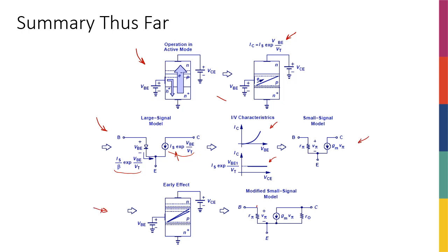Then we introduced the early effect and realized it's not a perfect current source — there's a little slope on the IC-VCE line. The modified large-signal equation becomes IC = IS · e^(VBE/VT) · (1 + VCE/VA). In the small signal model, the effect of early effect is the addition of R0 connected between collector and emitter, with value VA over IC.